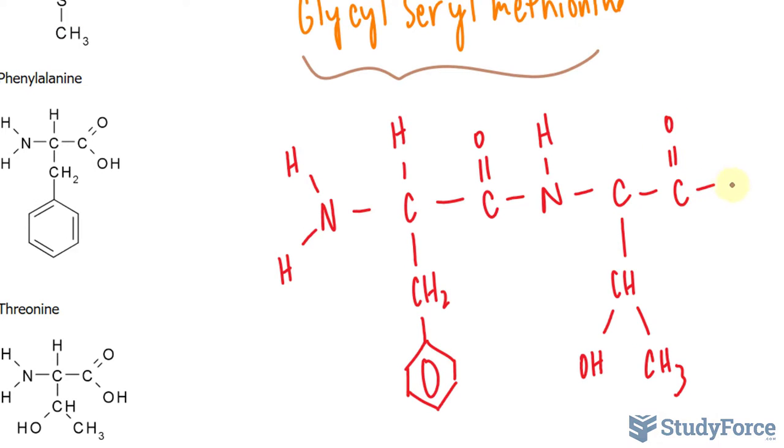And now we have its R-group, and the carboxyl. At physiological pH, just as before, this loses its hydrogen and this gains a hydrogen, making it positive on one end and negative on the other end.